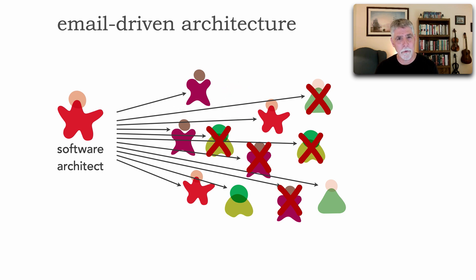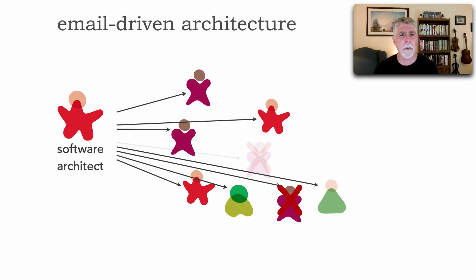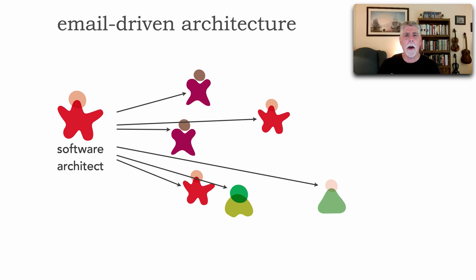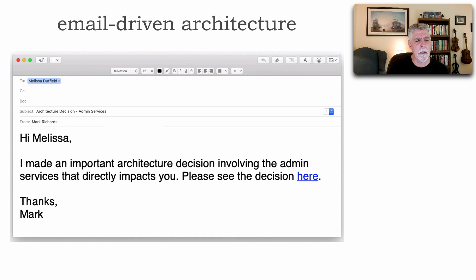It's really about trimming down and focusing on the right stakeholder — those for whom the decision is actually relevant. Let me show you a template email I use to avoid email-driven architecture. The email is addressed to Melissa, the subject is 'Architecture Decisions — Admin Services,' and the body reads: 'Hi Melissa, I made an important architecture decision involving the admin services that directly impacts you. Please see the decision here' — with a link.